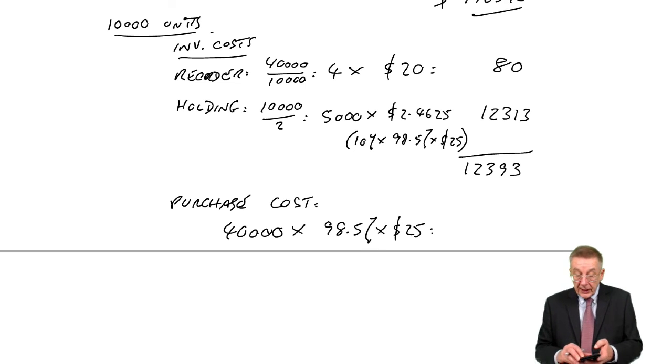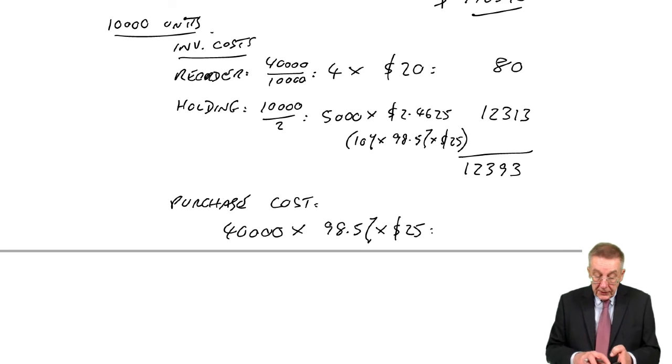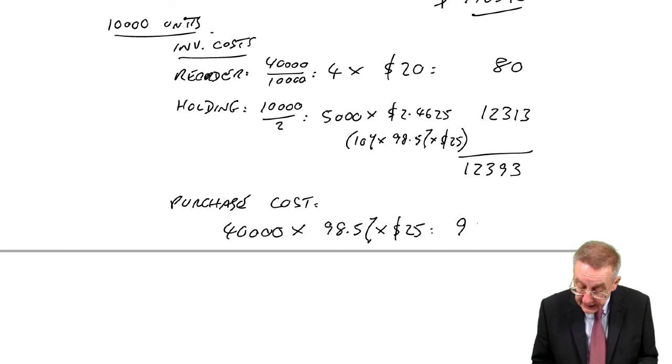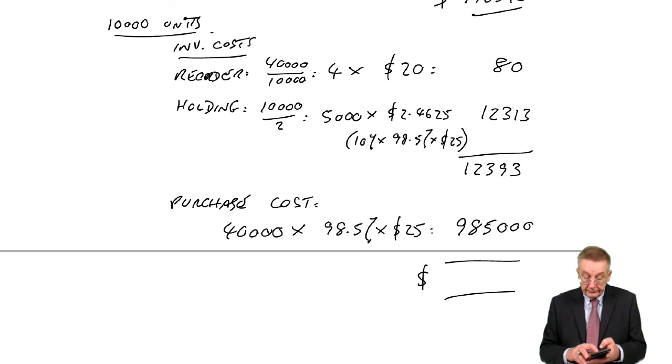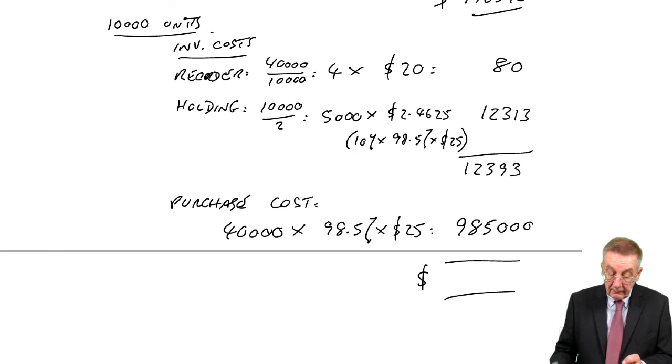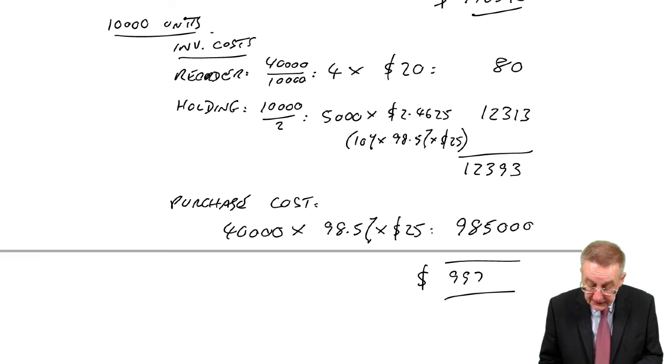So the purchase cost over the year falls to $985,000. And so the two together, $997,393.